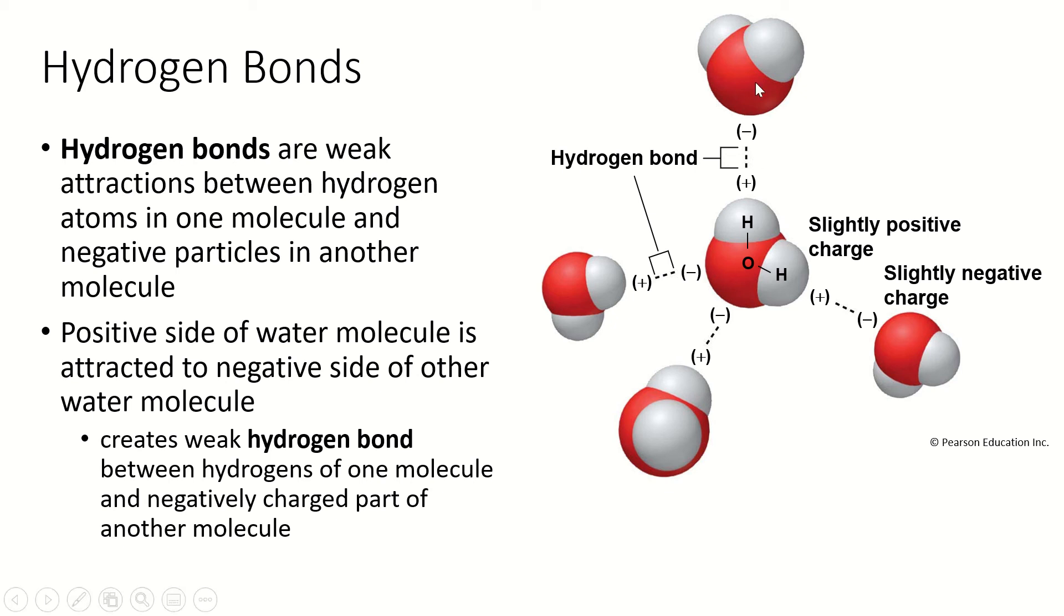And so the hydrogen bonds individually are very, very weak. They're not actually sharing an electron. They're not giving an electron. It's just this. There's some more positive charge here and a lot of negative charge here. And remember opposites attract. So the positive end of the water molecule of one water molecule is attracted to the negative end of another water molecule.